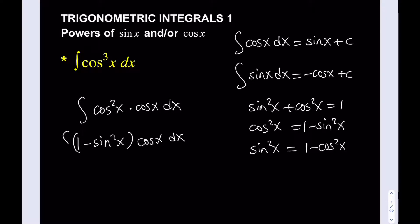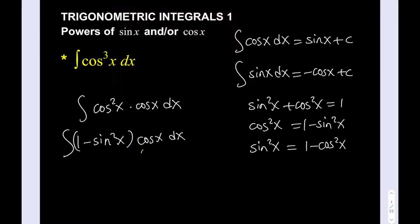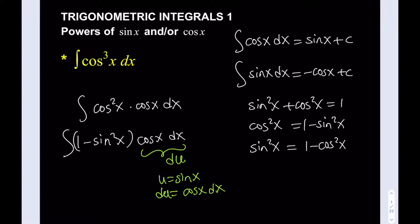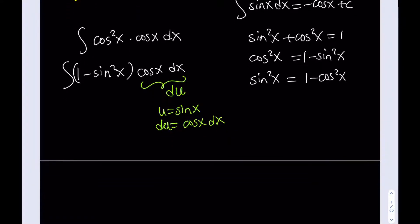That is being multiplied by cosine of x dx. At this point, do not distribute — you can, it'll be the same thing, but I like to keep it this way. Now we're going to use u-substitution. Our cosine x dx is going to be du, therefore u will be sine x. So u equals sine x and du equals cosine x dx.